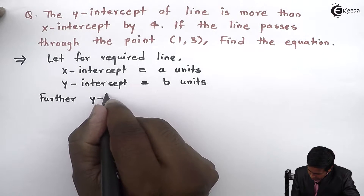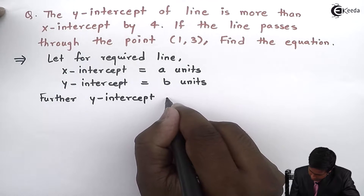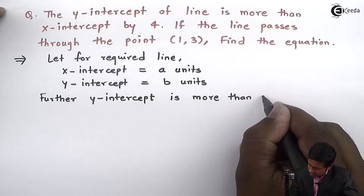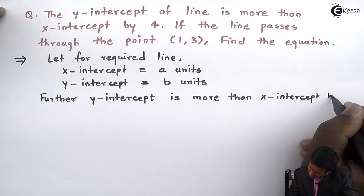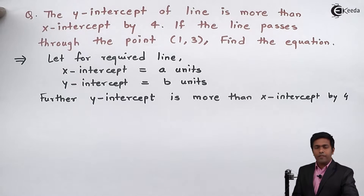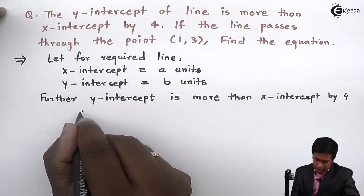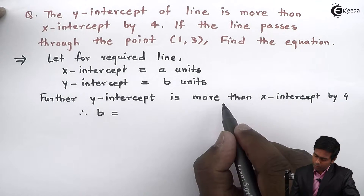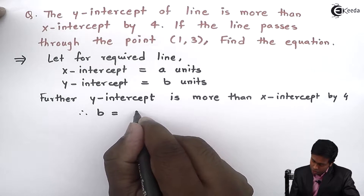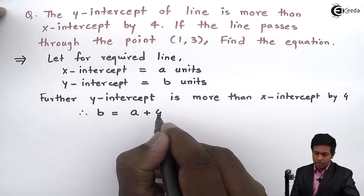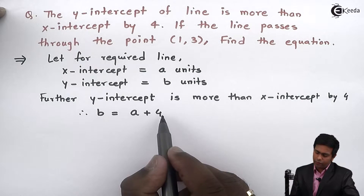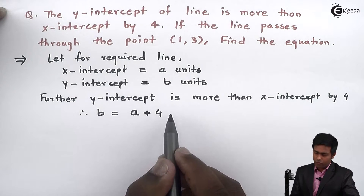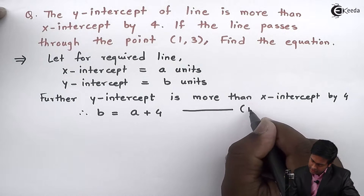The y-intercept is more than the x-intercept by 4. Putting this in mathematical form: b (the y-intercept) equals a (the x-intercept) plus 4. Therefore, b = a + 4. This is Equation 1.